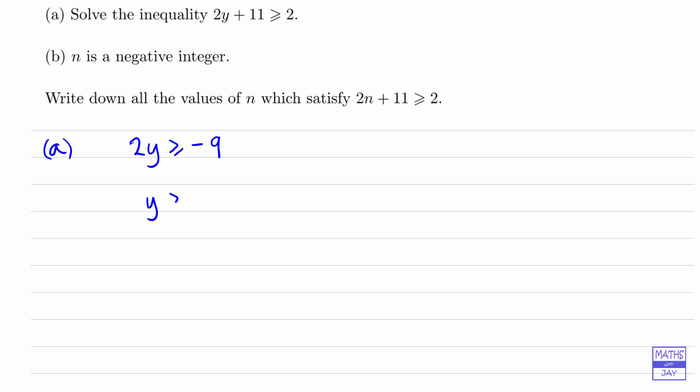So if 2y is greater than or equal to negative 9, then y must be greater than or equal to negative 4.5.